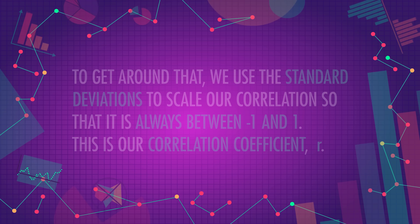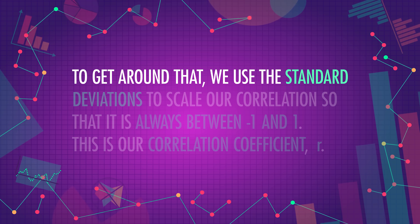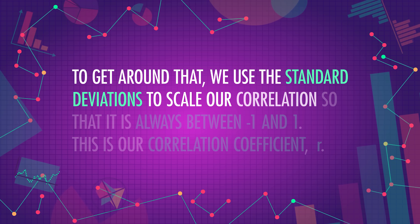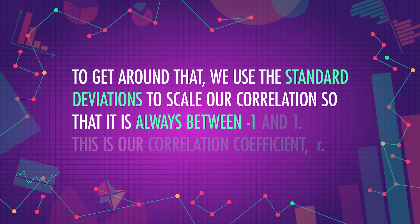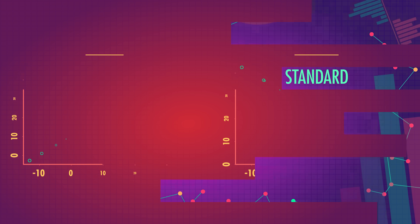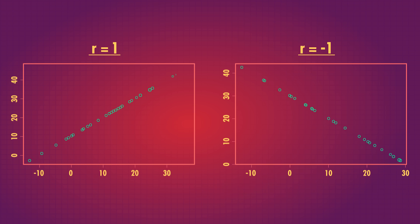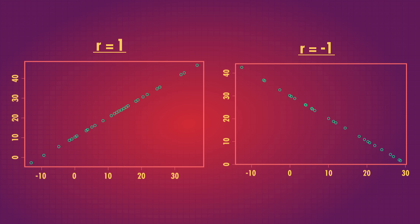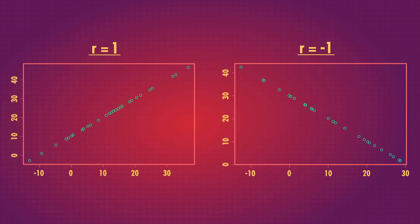The units of your variables can affect the regression coefficient, and can also affect the calculation of our correlation. To get around that, we use the standard deviations to scale our correlation so that it's always between negative 1 and 1. This is our correlation coefficient, r. Interpreting r involves two things: the sign of the number — whether it's positive or negative — and how big the number is. The sign will tell you whether your two variables move together (positive r) or in opposite directions (negative r).